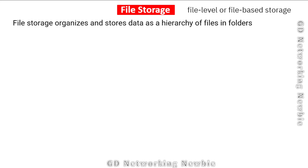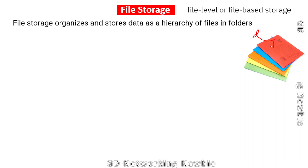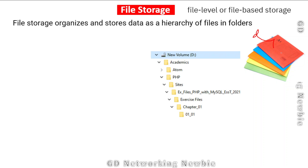First we are going to discuss file storage, which is also called file-level or file-based storage. File storage organizes and stores our data as a hierarchy of files in folders. For example, we can have files and put them in different folders, and when required we can go to that particular folder and access that file. On a Windows machine for example, in the D drive we have different folders and within those folders we can have different subfolders, giving a hierarchy.